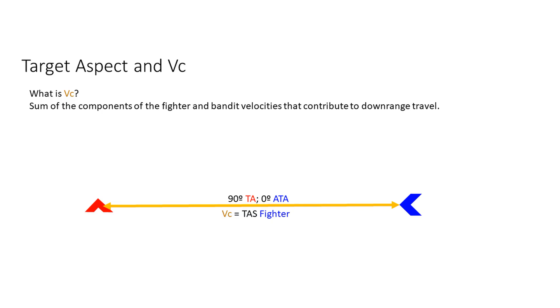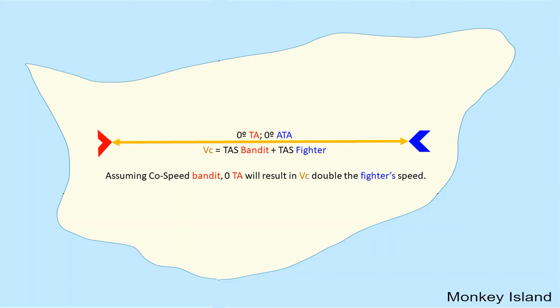In this scenario, target aspect is 90 degrees and the fighter is flying towards the bandit, so closure rate would equal the airspeed of the fighter. And that's really all there is to this lesson, but this is something we're definitely going to be taking and building on later.